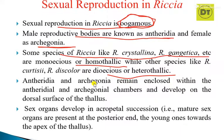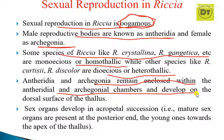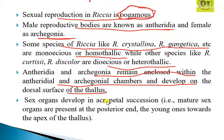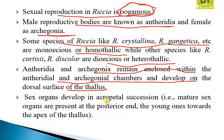Antheridia and archegonia remain enclosed within the antheridial and archegonial chambers and develop on the dorsal surface of the thallus. So the sex organs are enclosed in the antheridial and archegonial chambers.